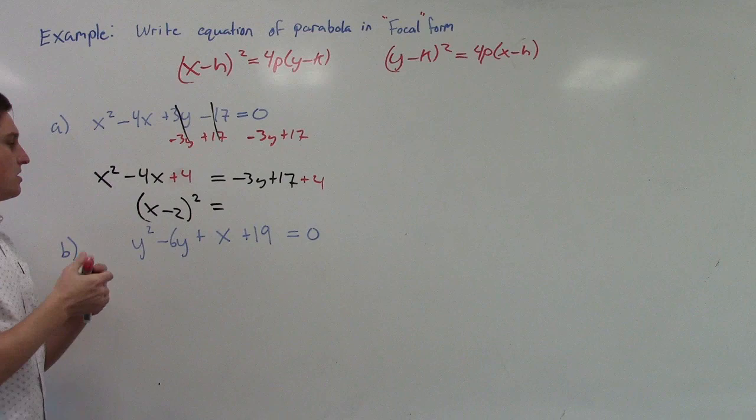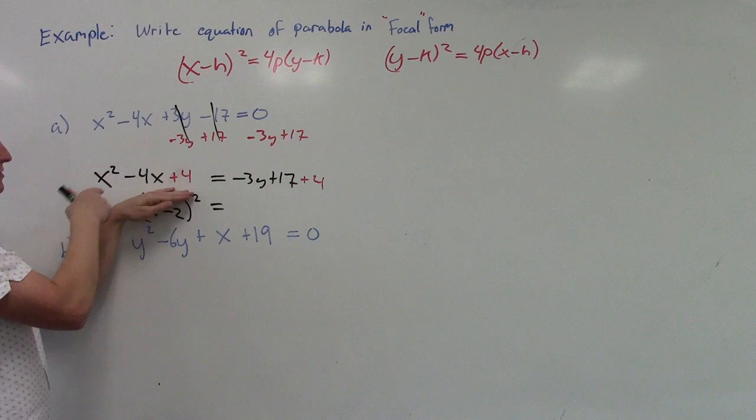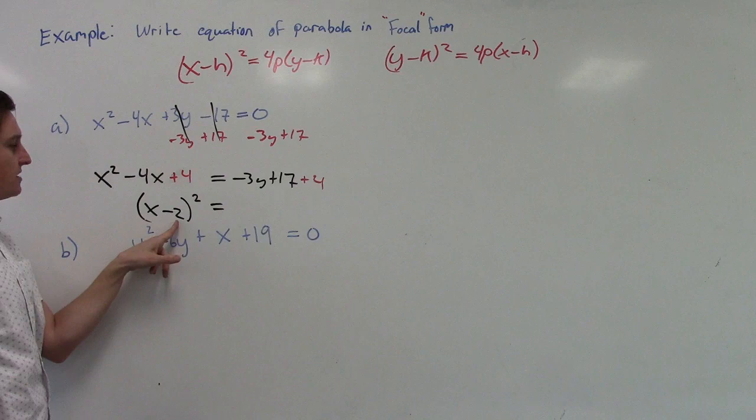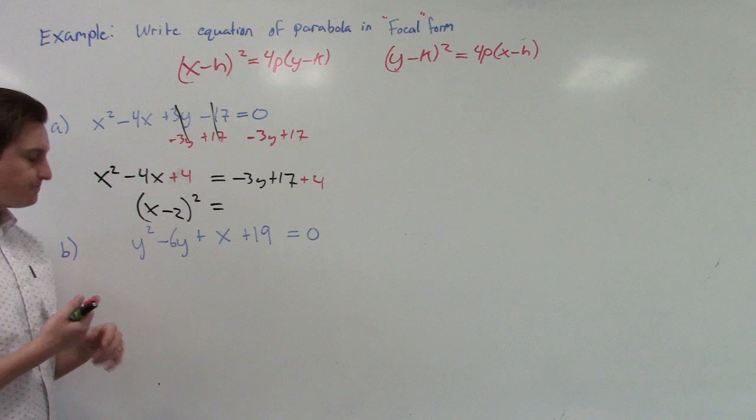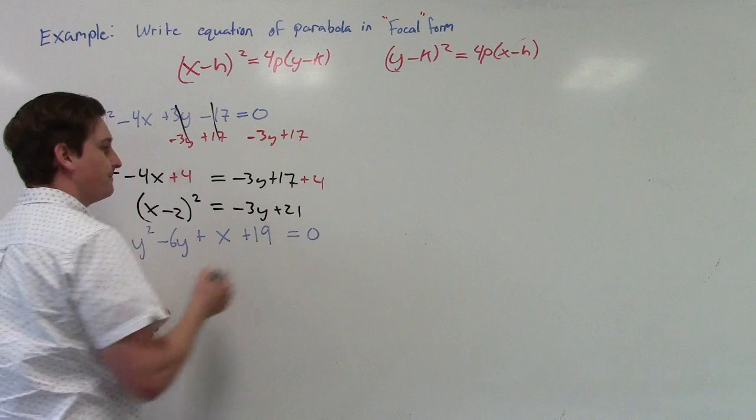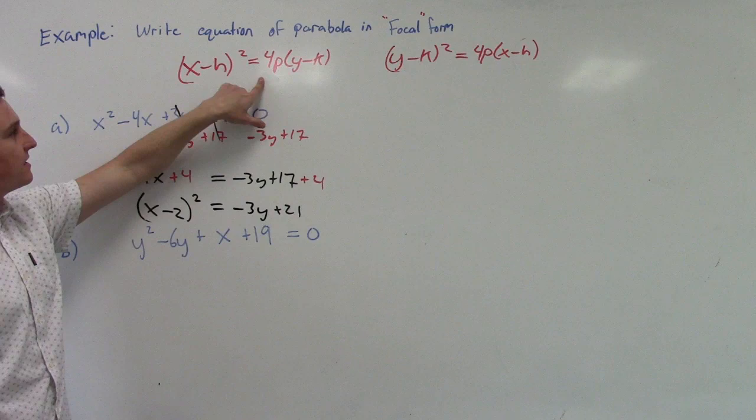We add plus 4 on the right-hand side as well to keep everything balanced. So negative 4 divided by 2 is negative 2, squared is 4. On the other side, we're going to have negative 3y plus 21. We've done that many times — hopefully that's still fresh, especially since we recently talked about factoring.